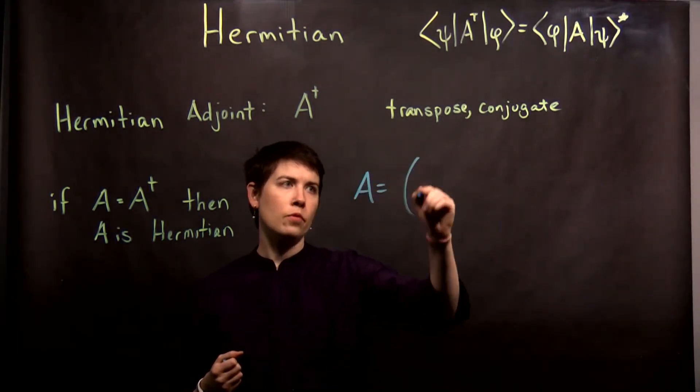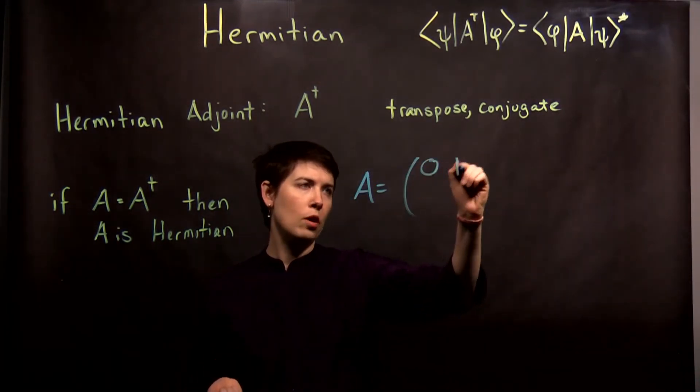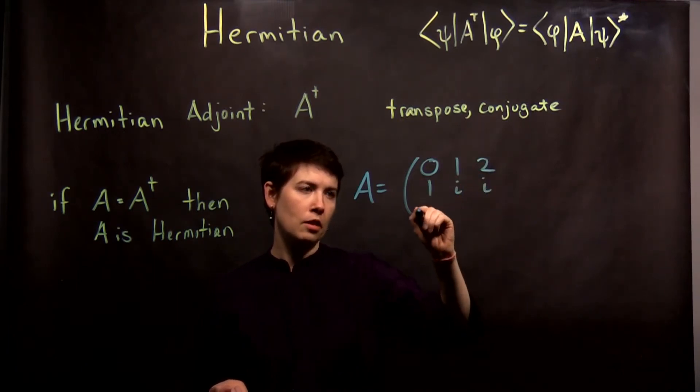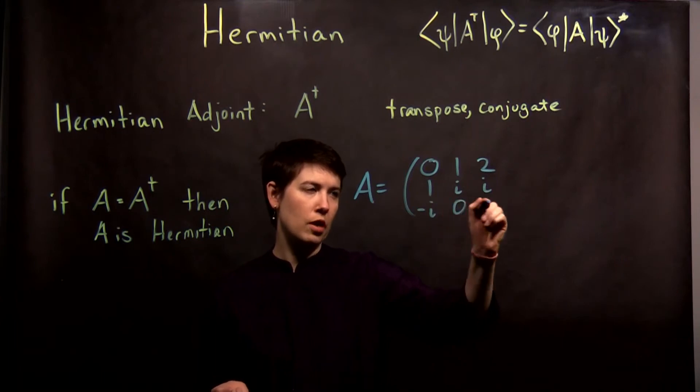So let's say that A is equal to 0, 1, 2, 1, i, i, negative i, 0, 0.